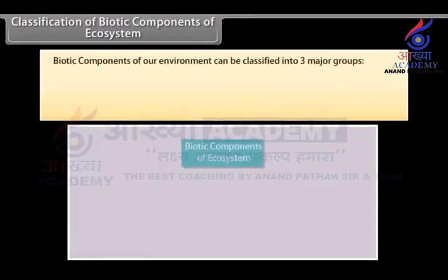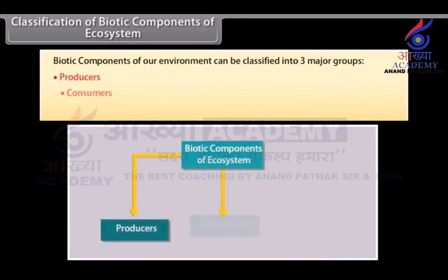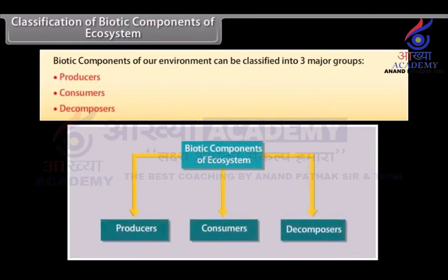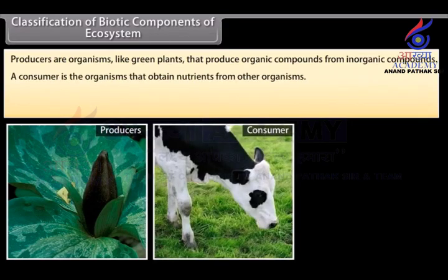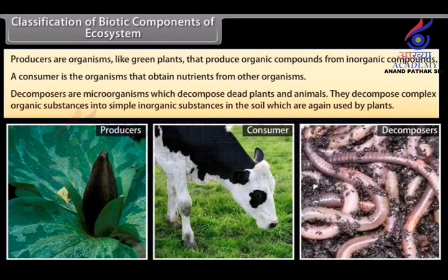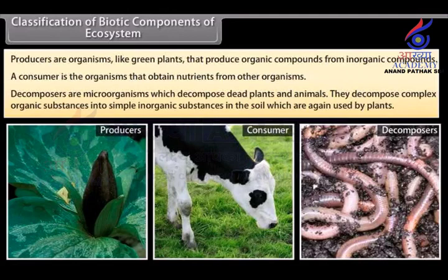Classification of biotic components of ecosystem: Biotic components of our environment can be classified into three major groups — producers, consumers, and decomposers. Producers are organisms like green plants that produce organic compounds from inorganic compounds. A consumer is an organism that obtains nutrients from other organisms. Decomposers are microorganisms which decompose dead plants and animals into simple inorganic substances in the soil, which are again used by plants.